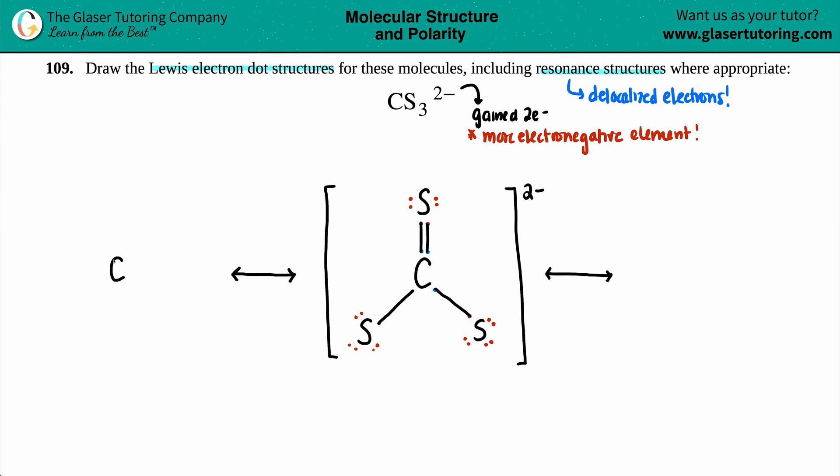So we'll start off with that. We have carbon in the middle. We're going to put the double bond here now, single and single. Carbon in the middle, I'll put the double bond here, single and single. Now when you're swapping them, you're swapping the placements as well. So the double bond always goes with the sulfur with two lone pairs. The single bonds go with the sulfur with three lone pairs.